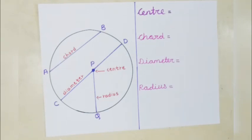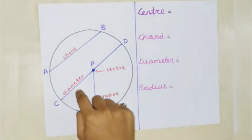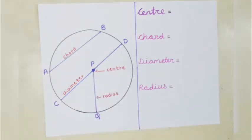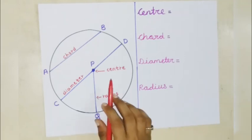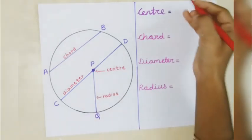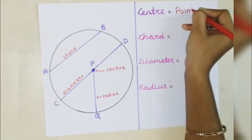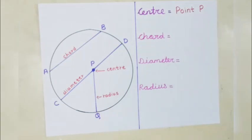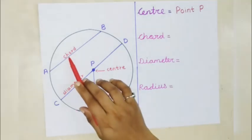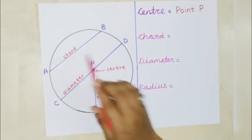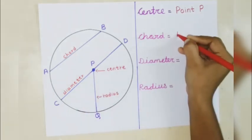Here you all can see center, radius, diameter, and chord. I will show you — the center is point P. Can you all tell me the chord of a circle? I have written chord AB. Now tell me the diameter. The diameter is CD. The radius is PQ.